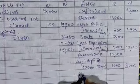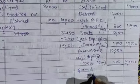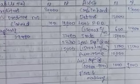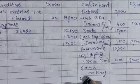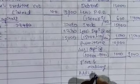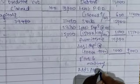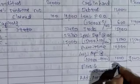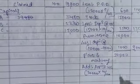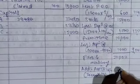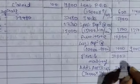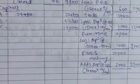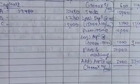And next one is plant and machinery. For plant and machinery, appreciation is there — increase in the value. The balance sheet value of plant and machinery is 30,000, and add 10% appreciation. So 10% on 30,000 becomes 3,000. It becomes 30,000 plus 3,000 — that is 33,000, increase in the value of plant and machinery. So now all the balance sheet items are over.